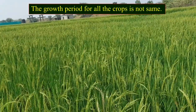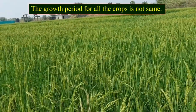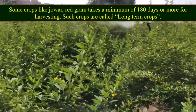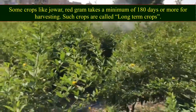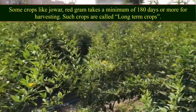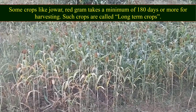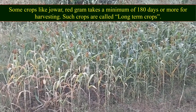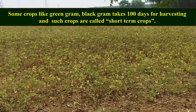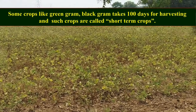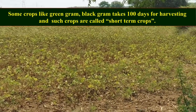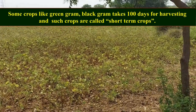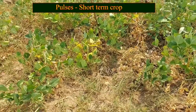The growth period for all crops is not the same. Some crops like sowar and red graham take a minimum of 180 days or more for harvesting — such crops are called long-term crops. Some crops like green graham and black graham take 100 days for harvesting, and such crops are called short-term crops.